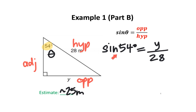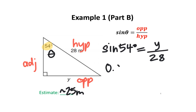On your calculator, find the sine button. If using a phone, you may have to turn it sideways. Punch in sine 54 — or you may have to put 54 first, then press the sine button afterwards. You should get a very long decimal. I'm going to round this to 0.809. Everything else is going to stay the same, since we haven't touched it yet.